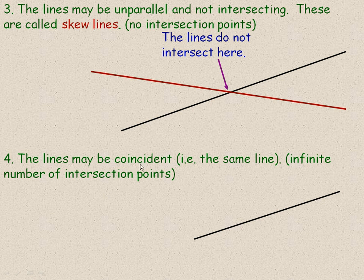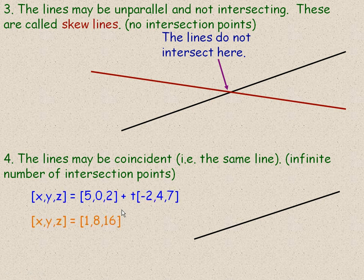Number four, the lines may be coincident, which means the same line. This is the same idea as in two-dimensional space, in which case they have an infinite number of intersection points. And here's an example in three-dimensional space of this situation.